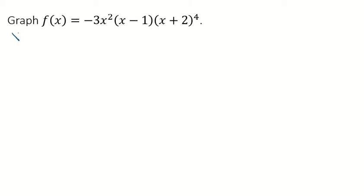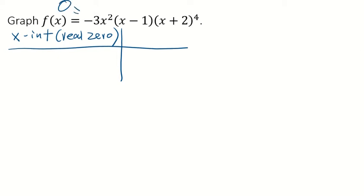Okay, so first x-intercept. X-intercept here is also called the real zero. To find the x-intercept, you want to make your y equal to 0. So you will have 3 x-intercepts. One comes from here, which is 0. One is from here, which is 1. And one comes from this factor, which is negative 2.